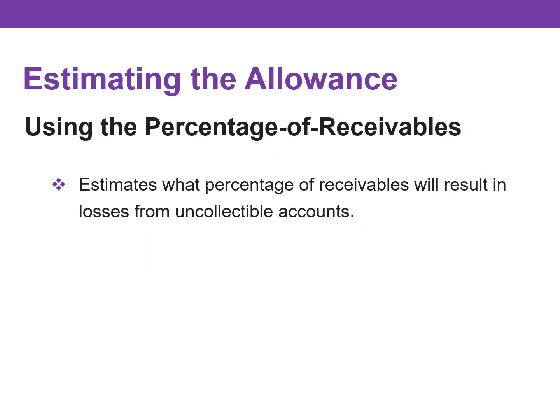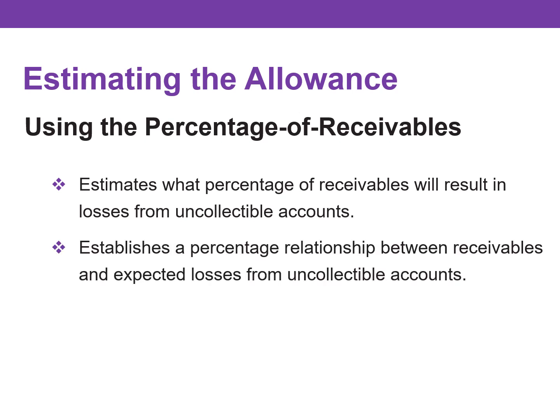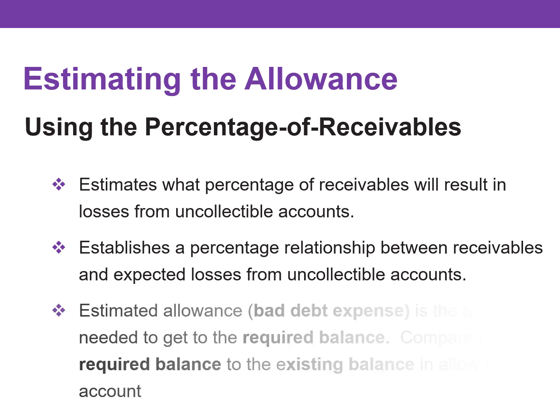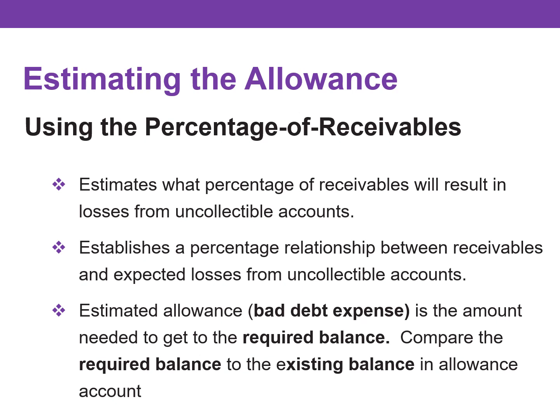Under the percentage of receivables basis, management estimates what percentage of receivables will result in losses from uncollectible accounts. The company establishes a percentage relationship between receivables and expected losses from uncollectible accounts. The amount of the estimated allowance or bad debt expense that should be recorded is the amount needed to get to the required balance. You simply compare the required balance to the existing balance in the allowance account.